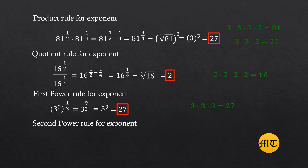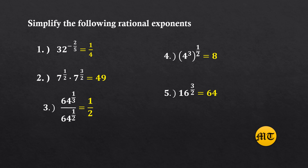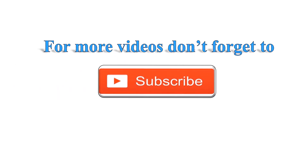Second power rule for exponents: four raised to one-third multiplied by sixteen raised to one-third. First, multiply four times sixteen — the product is sixty-four. Since the exponent is the same, write it as sixty-four raised to one-third. Transform to radical form: the cube root of sixty-four. The cube root of sixty-four equals four, since four times four times four equals sixty-four. Therefore, the answer is four. For more videos on mathematics, please don't forget to subscribe.